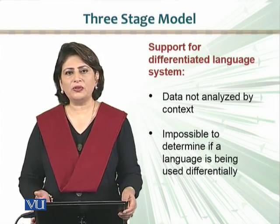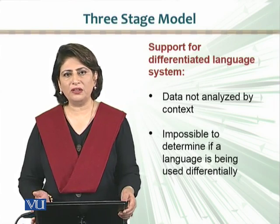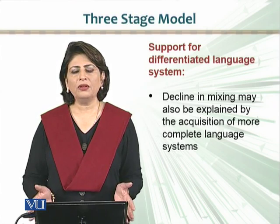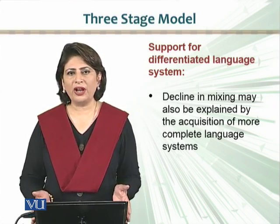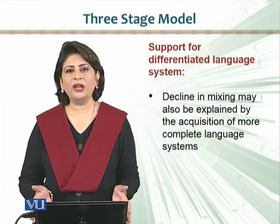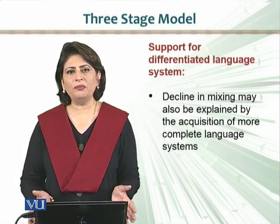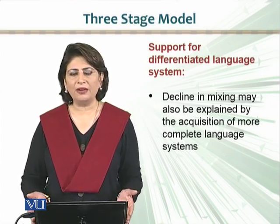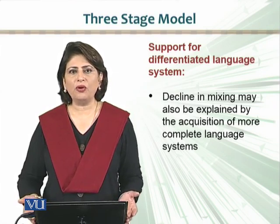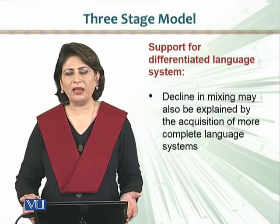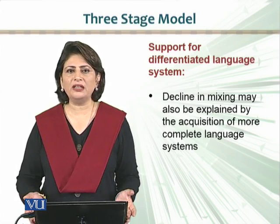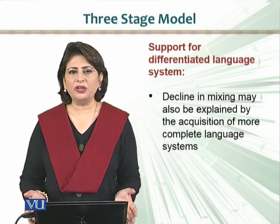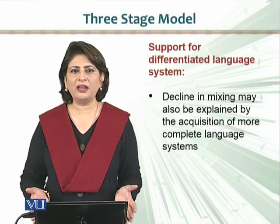So it is impossible to say whether children understand the difference between the use of two languages or not. They also argue that the phenomenon of how children gradually reduce simultaneous code-mixing may also be explained differently: as children gradually acquire the languages, their repertoire — the store of vocabulary and grammar in both languages — increases, so they don't need to rely on the other language to complete their expression. This can be explained not by the unitary language system, but simply as an acquisition process.